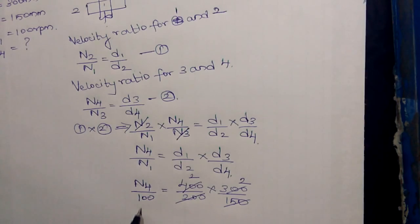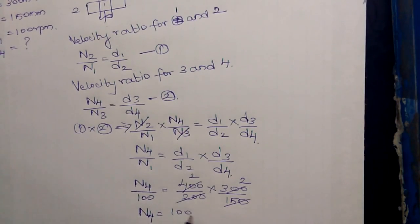The speed of the follower pulley is arrived as 400 rpm.